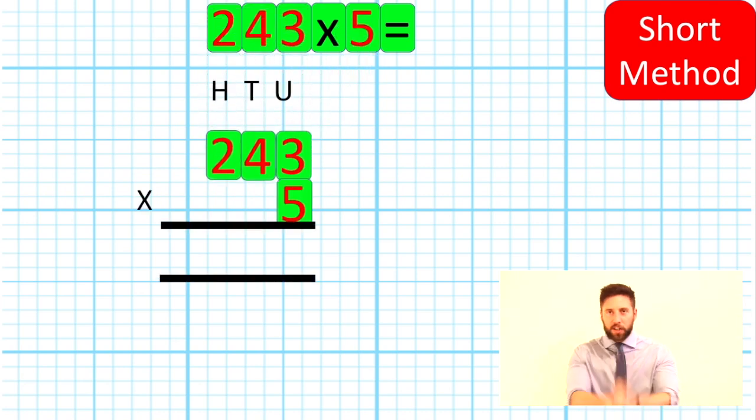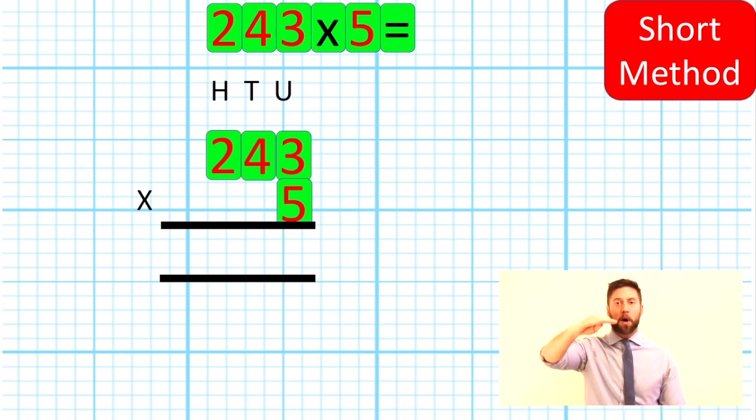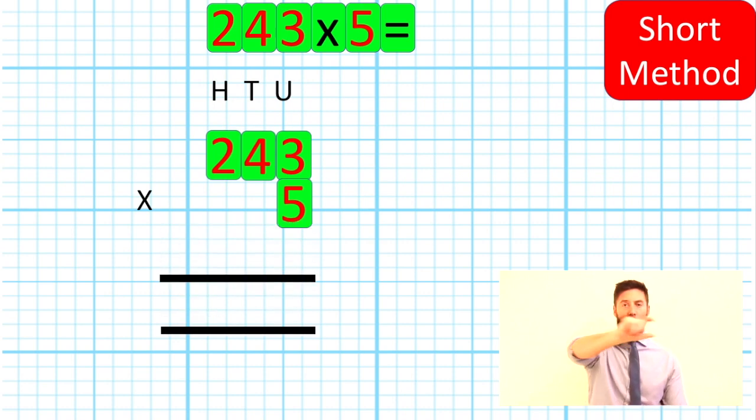Short method. We've got the same question: 243 times 5. We are going to set it up ever so slightly different because it's short. We only need one bar across to get our answer. But we're going to make sure we've got our units, our tens and our hundreds all at the top there because they're really important. This is column method. We need to make sure we are doing things in columns and in the right columns. Now, one little tip for you. I want you to drag this bar down. Leave a column, leave a bar across there. We're going to use that in a moment.